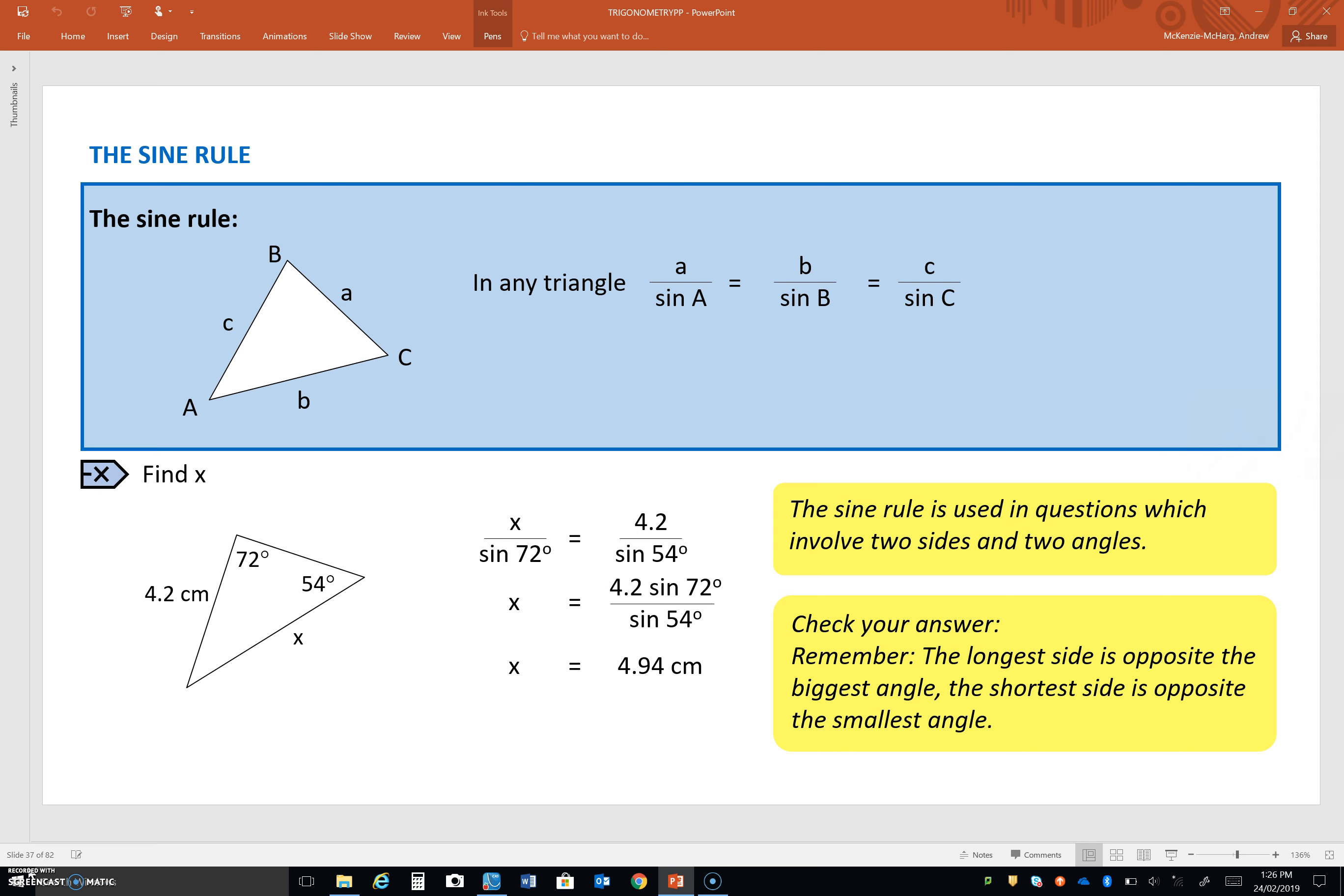Now, the pattern, or the symmetry of the sine rule, is really obvious. What it says is that if you take a side of a triangle, so this one here that I've just coloured in blue, which is labelled little a, and you divide it by the sine of the opposite angle,